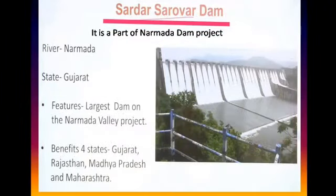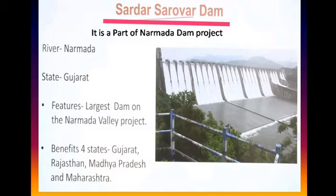This dam is Sardar Sarovar Dam and it is the latest dam of India — a new and very beautiful dam. There are actually three dams on the Narmada River, and Sardar Sarovar is the largest of the three. It is part of the Narmada Valley Project and provides water for irrigation to four states: Gujarat, Rajasthan, Madhya Pradesh, and Maharashtra. You must also note that the Statue of Unity is built near this dam.